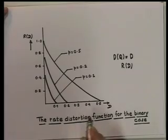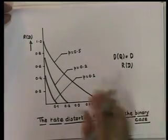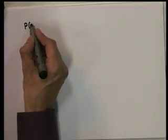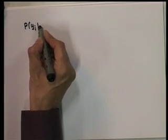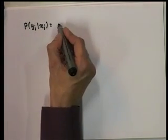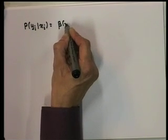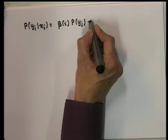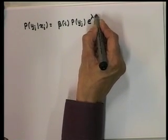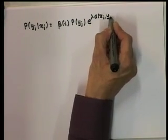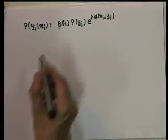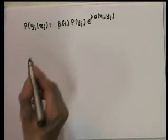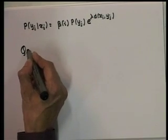From the figure it can be seen that a smaller average distortion can only be achieved by increasing the rate. Also, the rate distortion function R(d) for p equal to 0.5 is larger than for p less than 0.5 for every value of d, which is again intuitively true. Each point on the curve is reached by a matrix of conditional or transitional probabilities which give rise to both an average distortion d(q) equal to d and average mutual information R(d).